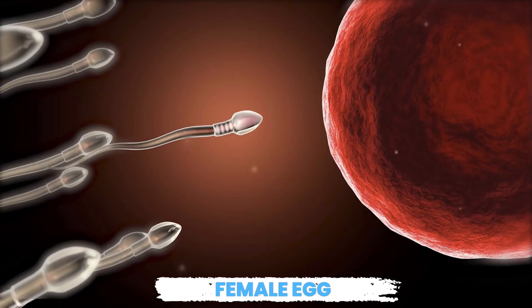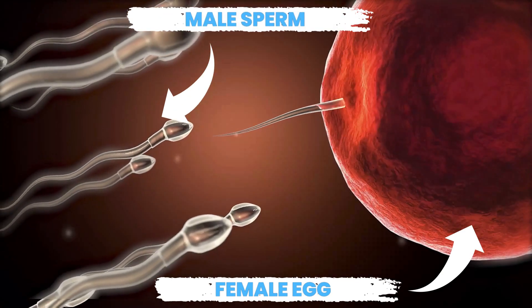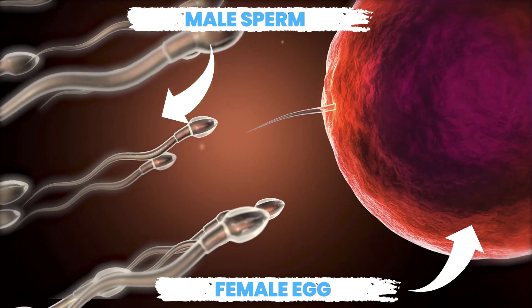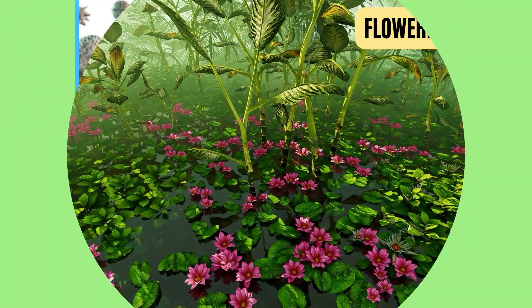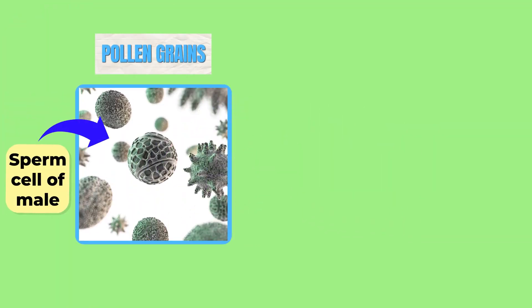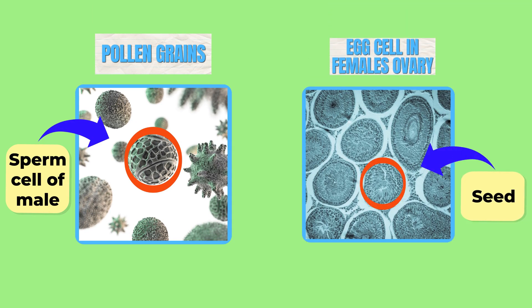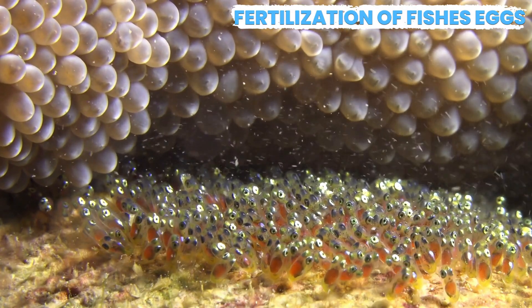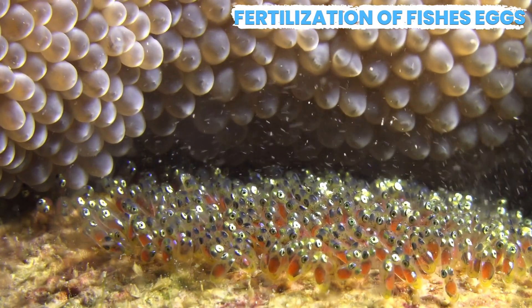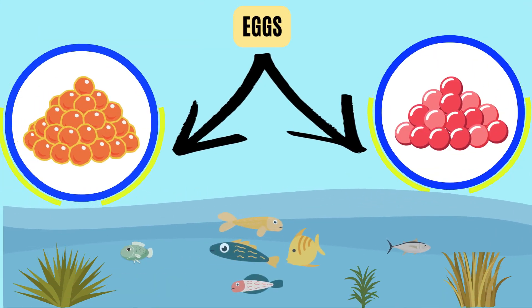The female's half of the DNA is in the egg cell, while the male's half of the DNA is in the sperm cell. For example, flowering plants are produced sexually, where the pollen grain, which is the sperm cell of the male, fertilizes the seed, which is the egg cell in the female's ovary. Similarly, female fish lay eggs and the male fish then spread sperm over the eggs to fertilize them. The eggs then develop into newborn fish.